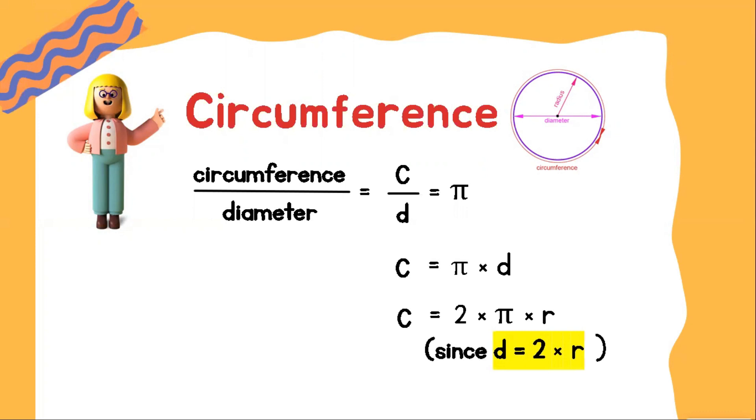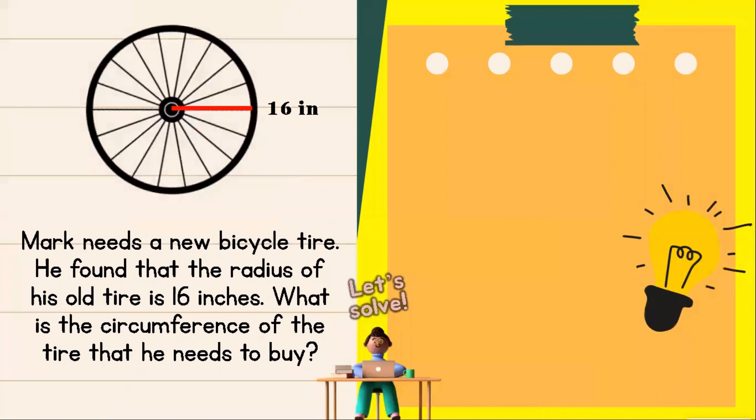Let's try to apply this formula to the story problem that we just had earlier. By this formula, let's now substitute it by the given data. The circumference is equal to 2 times 3.14, which is the value of the pi, times 16, which is the radius of this bicycle tire. Let's continue. 6.28 times 16 is equal to 100.48 inches.